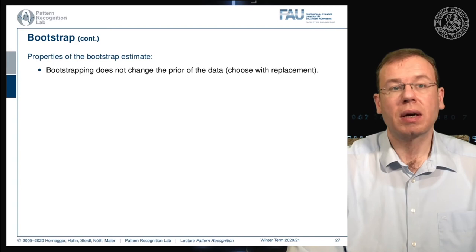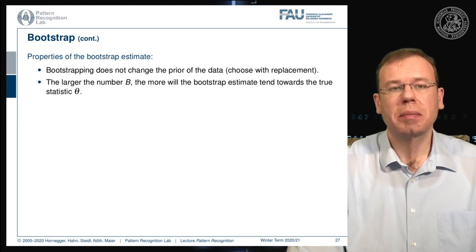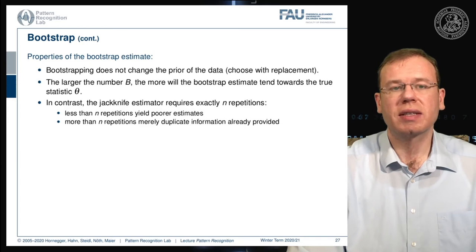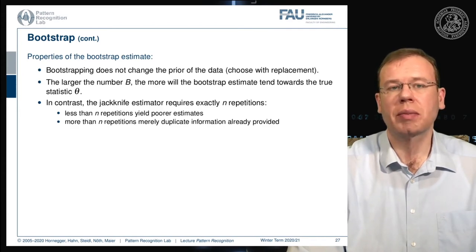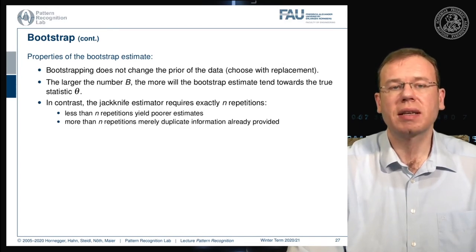Properties of the bootstrap estimate: bootstrapping does not change the prior of the data because you sample with replacement. The larger the number B, the more the bootstrap estimate will tend towards the true statistic of theta. In contrast to the jackknife, which requires exactly N repetitions, with bootstrapping if we have fewer than N repetitions we probably have poorer estimates, and if we have more than N repetitions we merely duplicate information already provided.